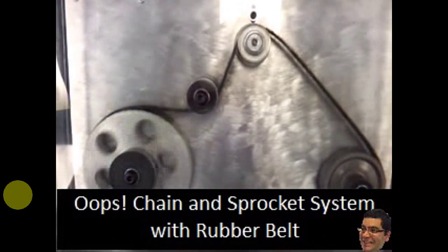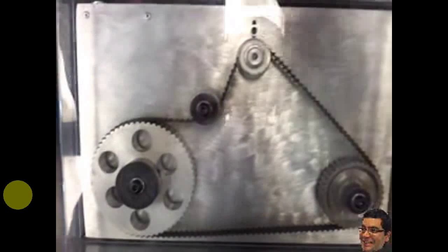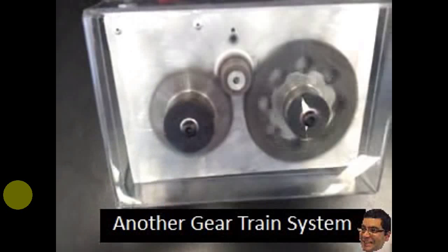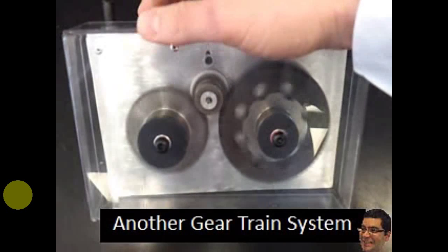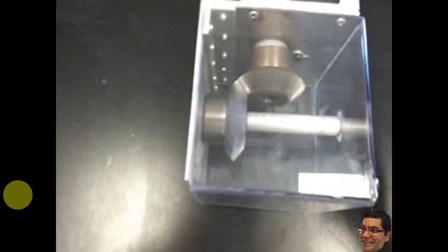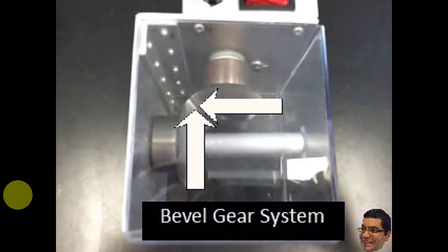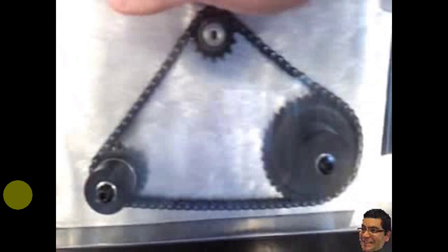They made them from scratch. And I thought maybe it would be cool, actually, if we make some of these. Another gear train. This is different because the other one had big to big. This one is small to big. Bevel gear.